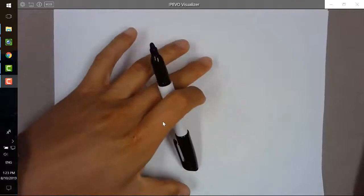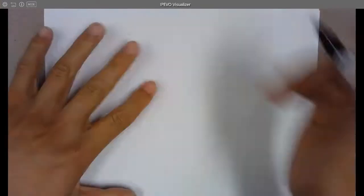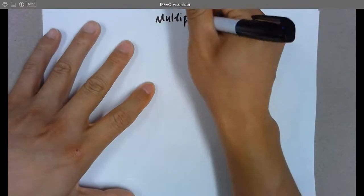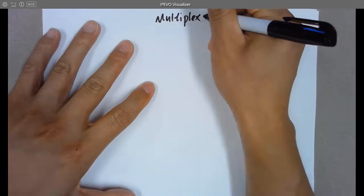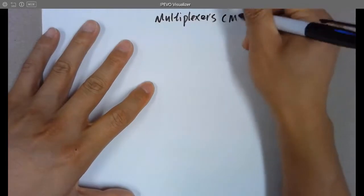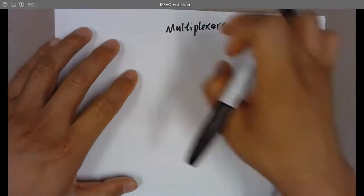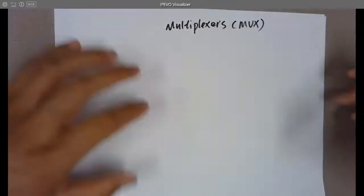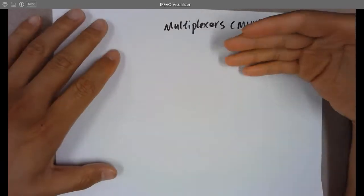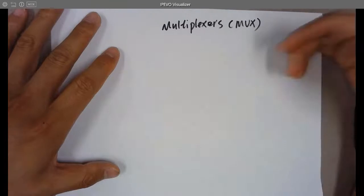In this video we are going to talk about multiplexers, or MUX for short. The function of this digital block is to select binary information from the input lines and deliver that to the output line.